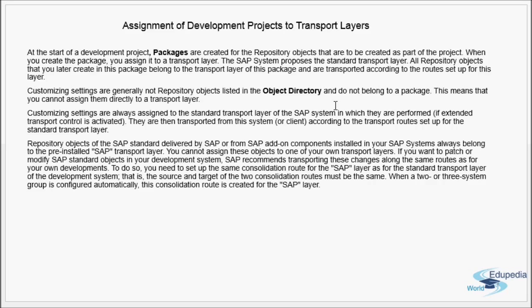Customizing settings are configuration changes made in SAP. They are generally not repository objects listed in the object directory and do not belong to a package — meaning you cannot assign them directly to a transport layer. Customizing settings are always assigned to the standard transport layer of the SAP system in which they are performed, and are then transported according to the transport routes set up for the standard transport layer.